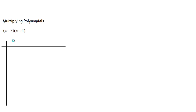I use algebra tiles to show this because that's the picture I need in my head, and I'm going to transfer that knowledge into a chart so it makes more sense and I know I didn't miss any pieces. I write my two terms across the top and along the side. We're going to multiply (x − 3) times (x + 4). Note that x minus 3 and x plus negative 3 are the same thing — it's kind of like a makeover.